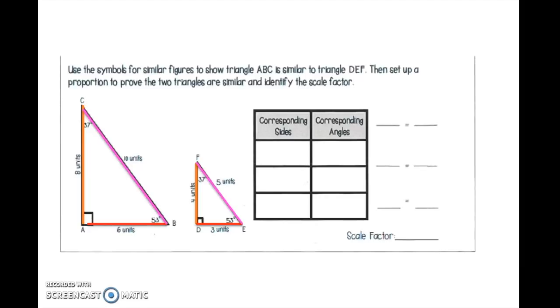Use the symbol for similar figures to show triangle ABC is similar to triangle DEF. Then we are going to set up the proportion to prove that the two triangles are indeed similar. And next, we are going to identify the scale factor.